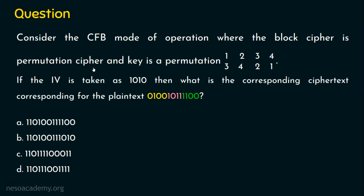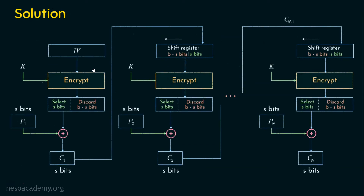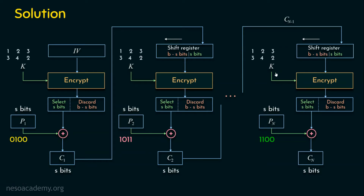Let's directly solve this question. In order to solve this, we need to bring in the CFB encryption operation. As mentioned, I am going to omit the select-and-discard portion because it is not explicitly mentioned in the question. The plain text blocks are P1 = 0100, P2 = 1011, and P3 = 1100. The key is the same throughout the operation, and the initialization vector is 1010. All this information is given in the question.